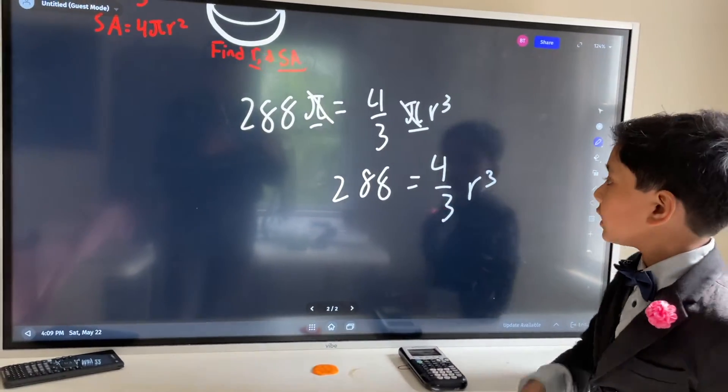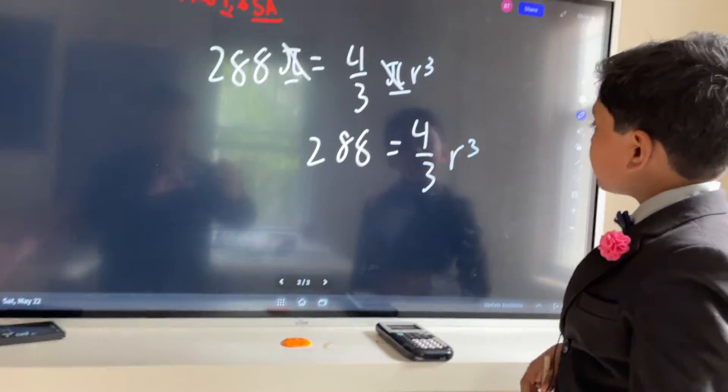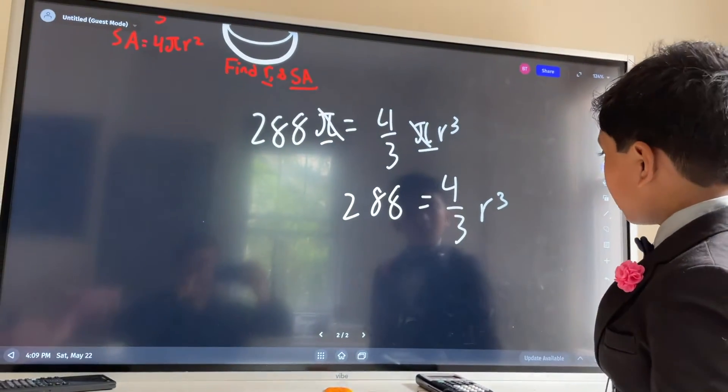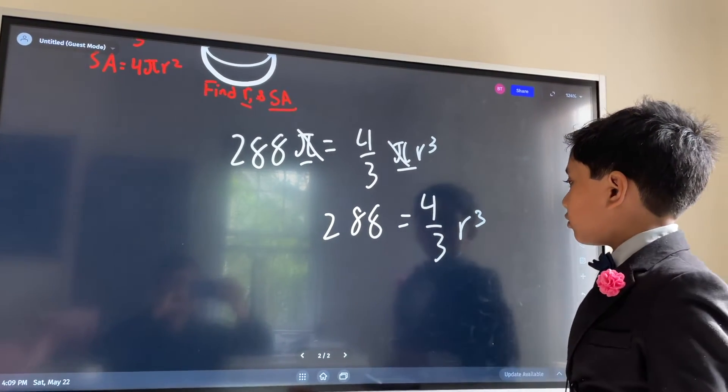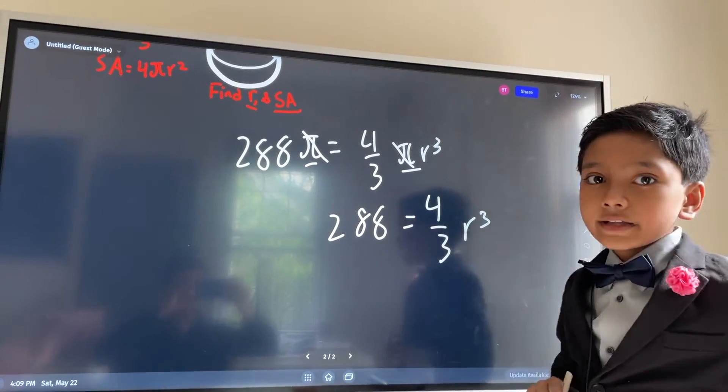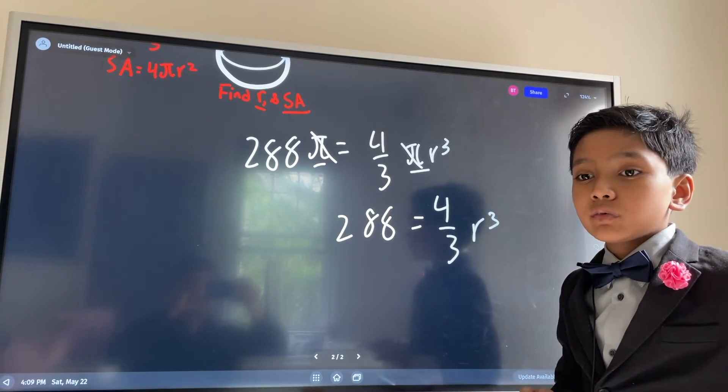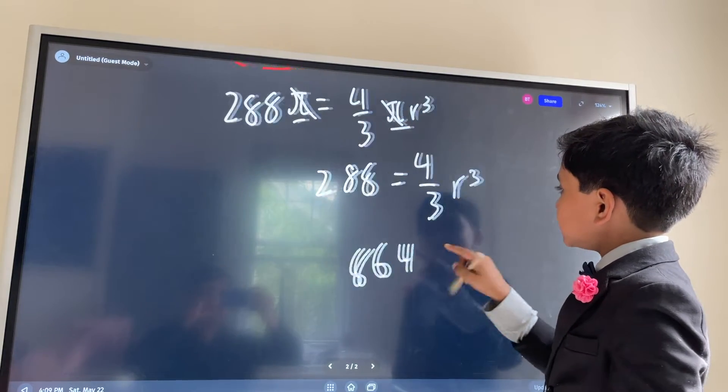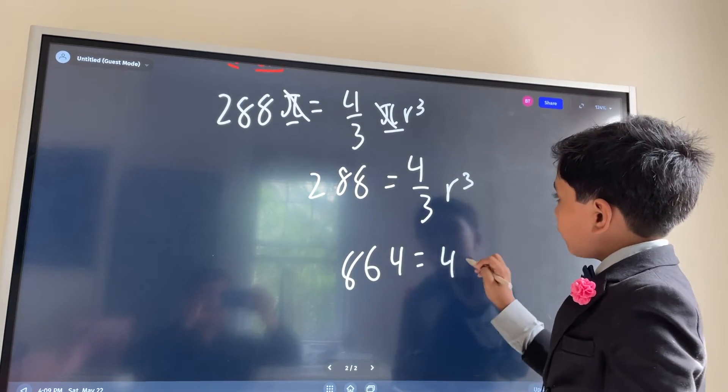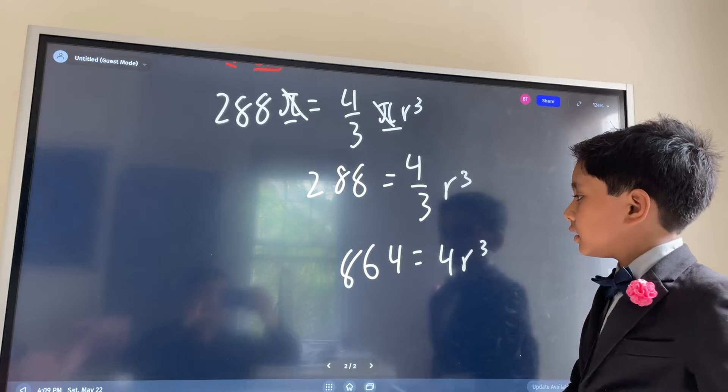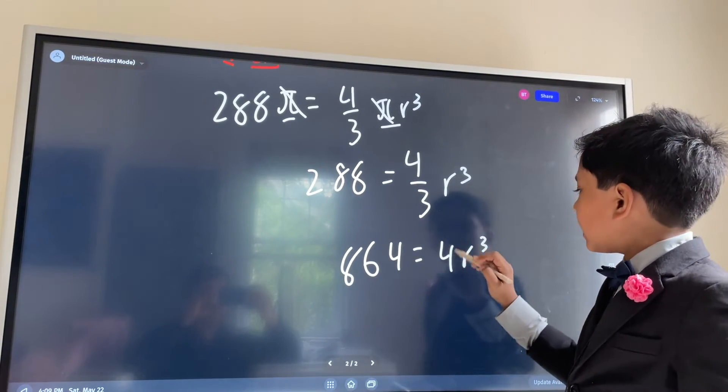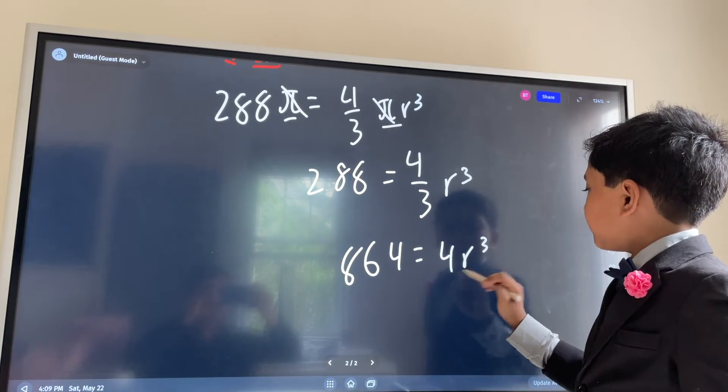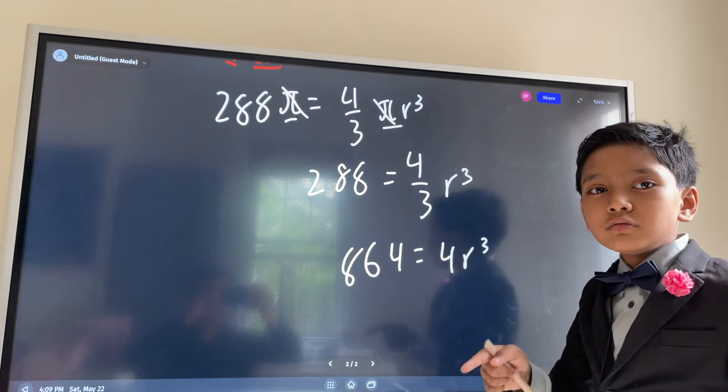Alright, we're getting close to finding the radius, but how do we isolate the r? First, let's take both sides and multiply them by 3. That will give us 864 is equal to 4 r cubed. And now, I think we can isolate this r cubed by dividing both sides by 4.